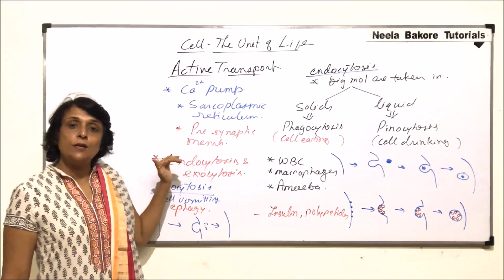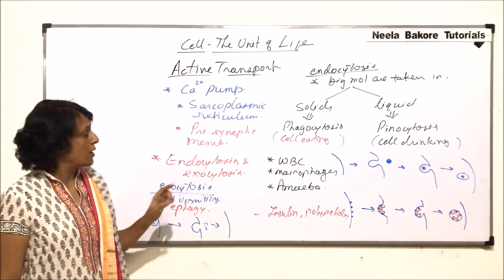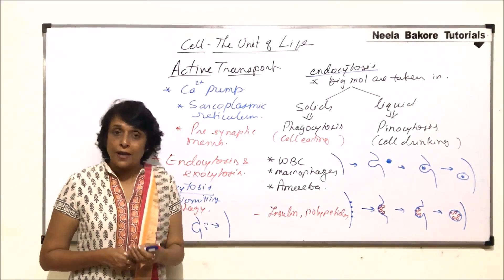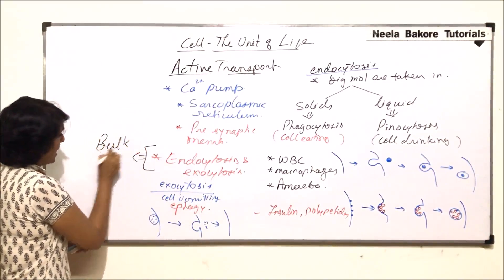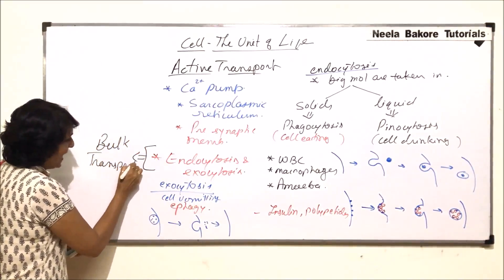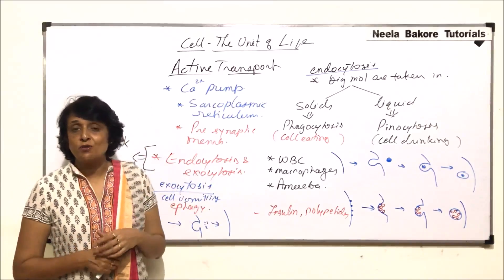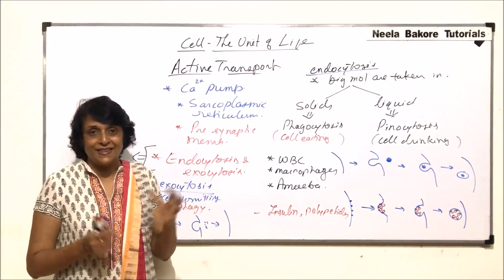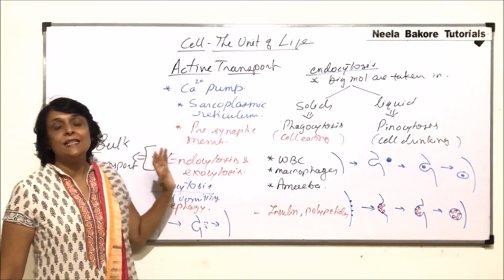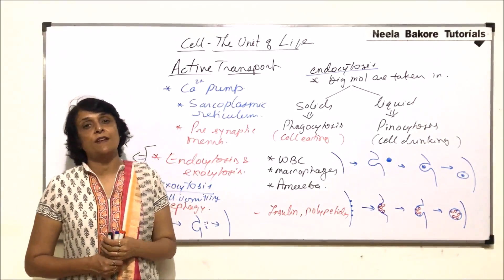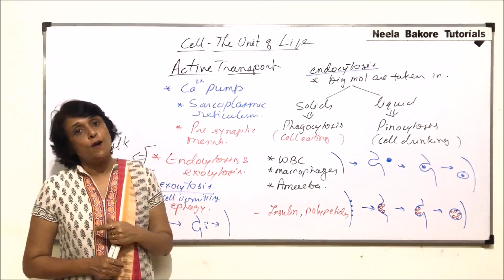Endocytosis and exocytosis are also active processes because the membrane structure has to change, and when membrane structure changes it requires ATP. Endocytosis and exocytosis together are also known as bulk transport. The reason they are called bulk transport is that a large quantity or a big substance is taken in or expelled — it is in bulk. These are all the active transport processes, and in the next part we will take up the modifications of the plasma membrane.